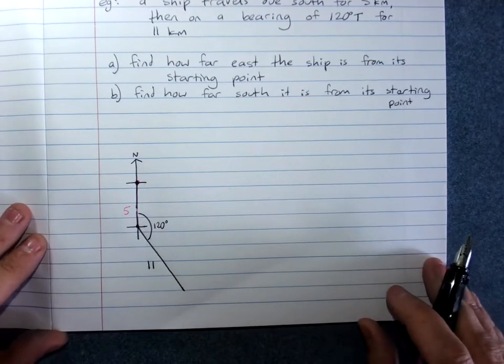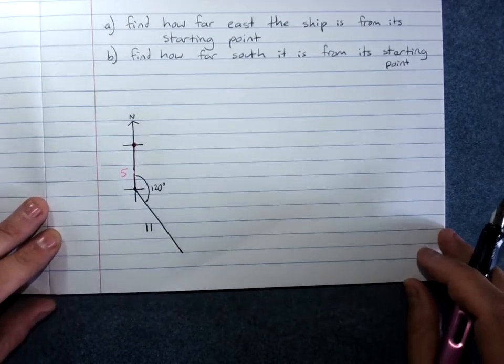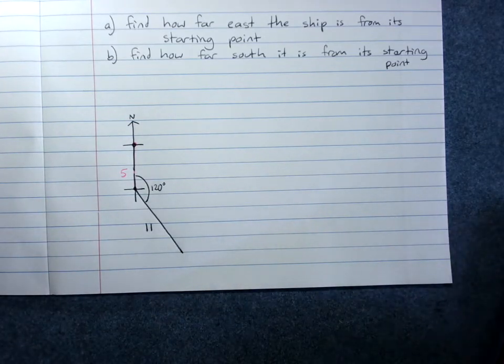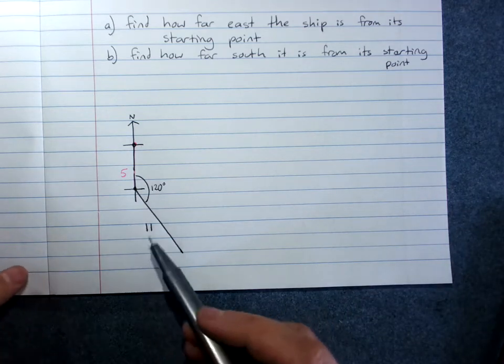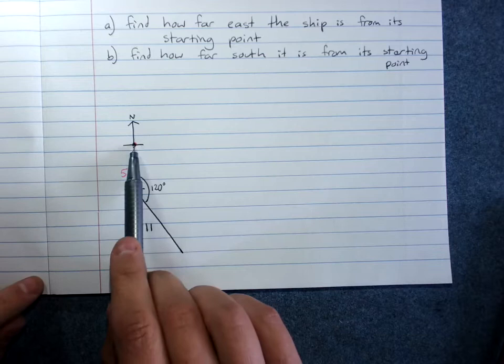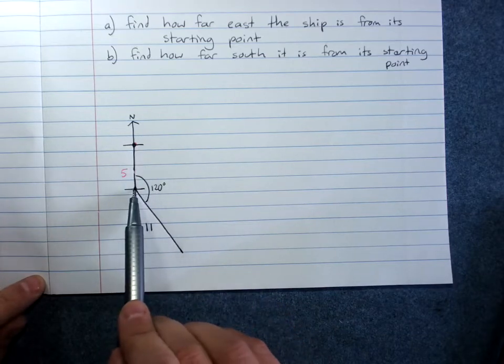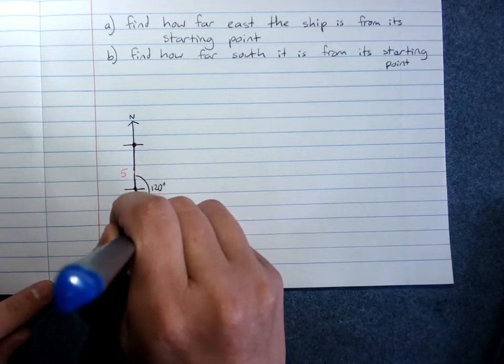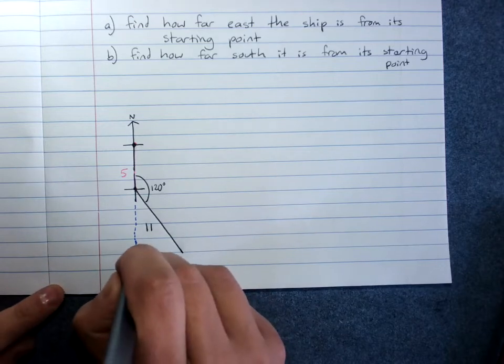And that comes from the question. We want to find out how far east and south it is from its starting point. We know that it went 5 kilometres south from its starting point. How far south it went, we get by extending the south direction like that.